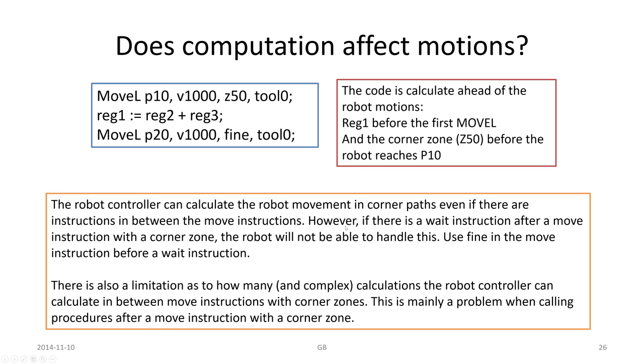However, if there is a wait instruction after a move instruction with a corner zone, the robot will not be able to handle this. In that case, after the first MoveL instruction, if we have a wait instruction, we should use a fine argument, a full stop, before a wait instruction. That makes sense because if it waits, it has to stop.